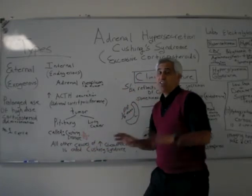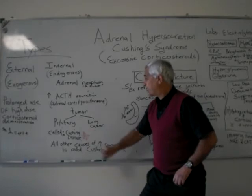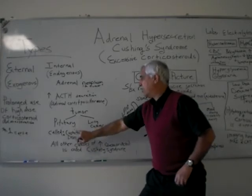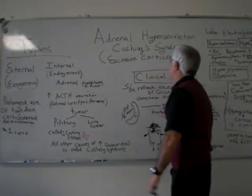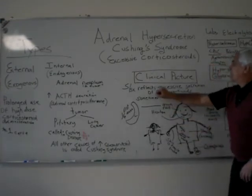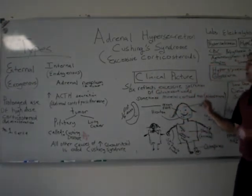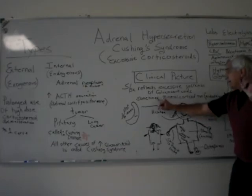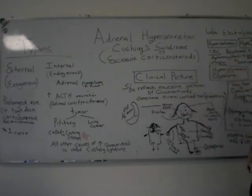It's called Cushing's Syndrome. If you say Cushing's Syndrome, you're saying it's not being caused by a tumor in the pituitary gland. Now, the clinical picture: signs and symptoms reflect excessive secretion of glucocorticoids. Sometimes the mineralocorticoids — aldosterone — might be in abundance also.